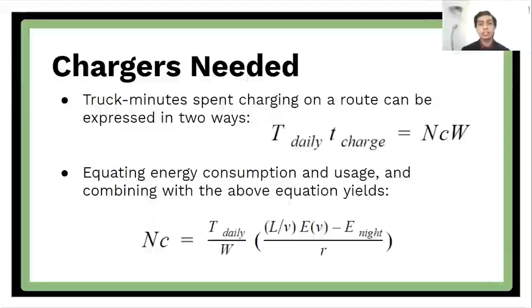Next, we can look at chargers needed by expressing truck minutes spent charging on the route in two ways. The first way is to multiply the number of trucks on the route every day by the time each truck spends charging. The second way is to multiply the total number of chargers by the amount of time each charger is in service during the day. And so equating these two things gives the first equation on this screen. Then combining this with the results of the previous two slides, we get the equation at the bottom of the screen, which on the right side allows you to compute a number which will give you the total number of chargers required.